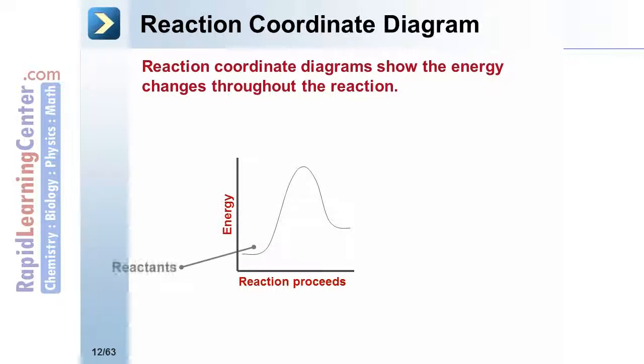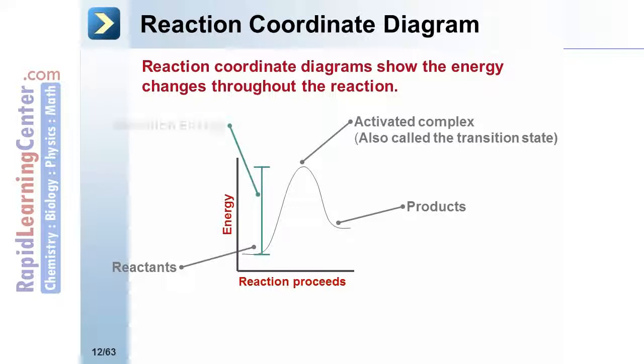The reactants are shown on the far left. The activated complex, or the transition state, is at the top of the hill. The products are shown on the right. The distance between the reactants and the activated complex is equal to the activation energy. The distance between the products and the reactants is the overall energy change for the reaction.